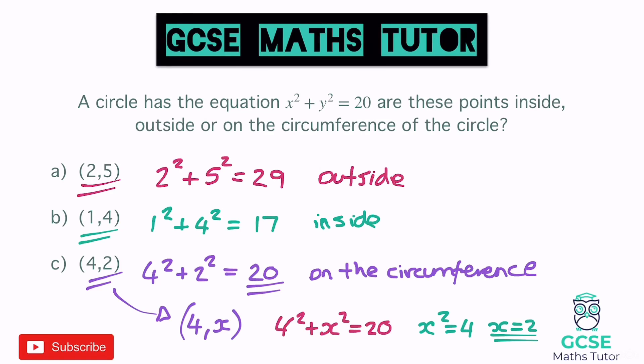A couple of little practice questions. Remember to square root the number at the end to get the radius. In this case it would give a surd — the square root of 20 for the radius — which would give us a surd answer. Obviously we could look at simplifying that, but we're not actually looking at that in this question. But that would be how we'd find the radius of this circle.